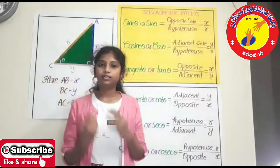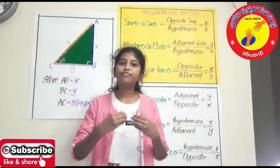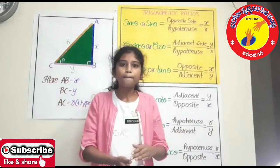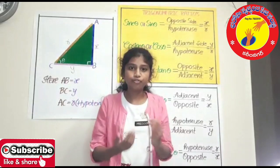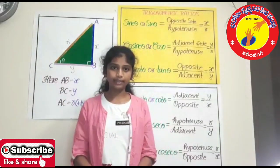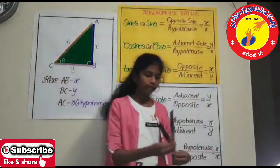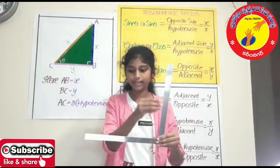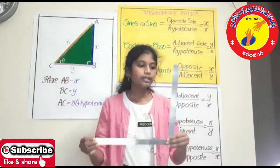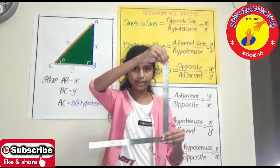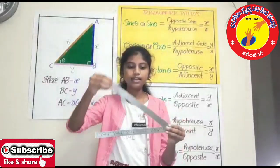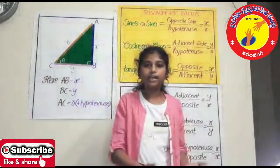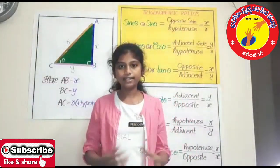To know about trigonometric ratios, first we need to know about an angle. What is an angle? The amount of rotation made by the moving ray with reference to the fixed ray is known as an angle. Here, let us consider this as a moving ray and this as a fixed ray. The amount of rotation made by the moving ray with reference to the fixed ray is known as an angle.